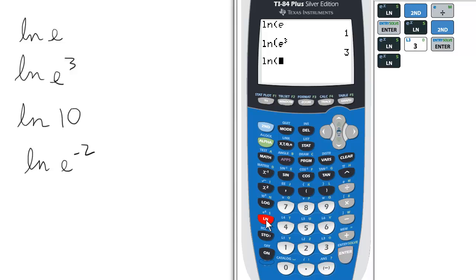Now let's take ln of 10. So the ln of 10, natural log of 10, is approximately 2.3.